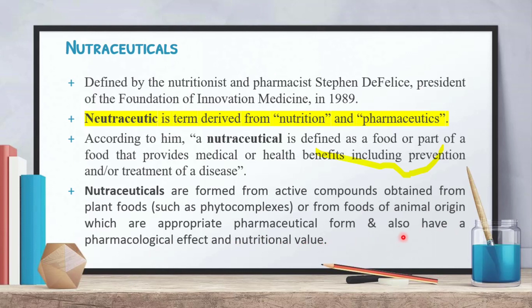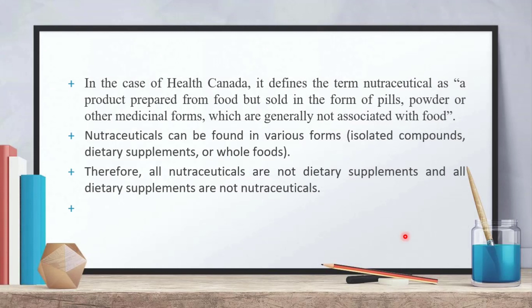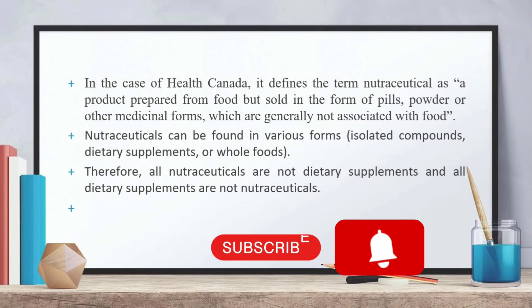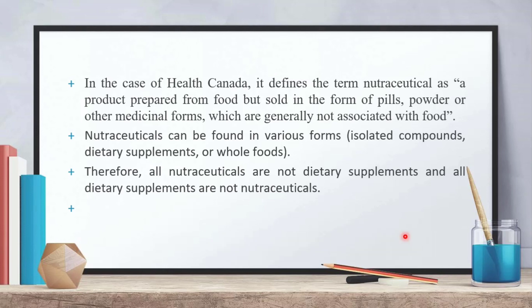So these are the major definitions of nutraceuticals. In the case of Health Canada, it defines the term nutraceutical as a product prepared from food but sold in the form of pills, powder or other medicinal forms which are generally not associated with food. Nutraceuticals can be found in various forms: isolated compounds, dietary supplements or whole foods.